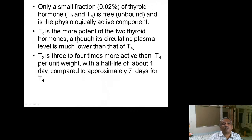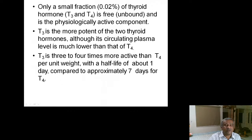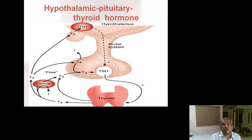T3 is more potent of the two thyroid hormones. T3 is three to four times more potent and active than T4 per unit weight, with a half-life of about one day, while T4 has a half-life of around seven days. T4 acts as a reservoir which is converted into T3 — the main active hormone.